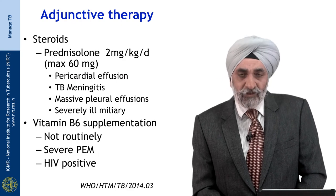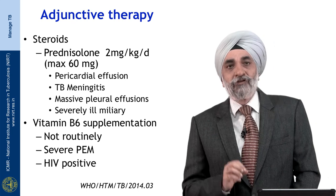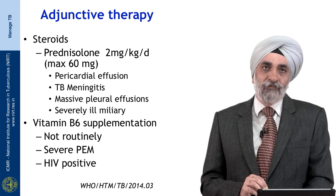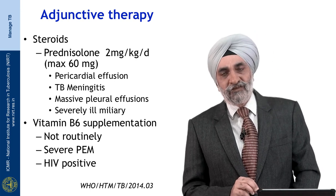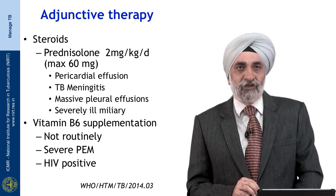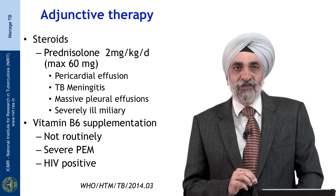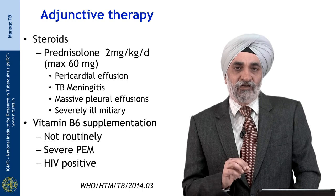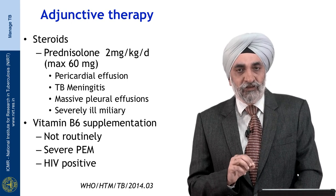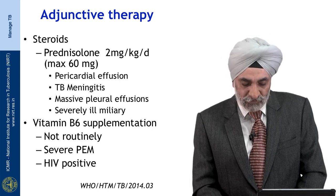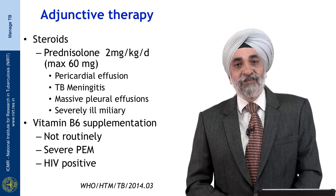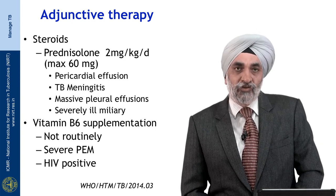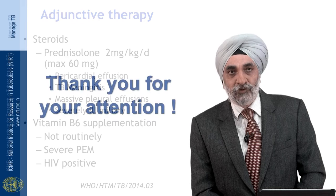Adjunctive therapy may be needed in some forms of childhood TB. Prednisolone 2 mg/kg/day — maximum 40 mg, or up to 60 mg in older children — is indicated for pericardial effusion, TB meningitis, massive pleural effusion, or severe hypoxic miliary TB, with pericardial effusion and TB meningitis being the primary indications. Vitamin B6 supplementation is recommended for children with severe malnutrition or HIV positivity due to risk of malabsorption.